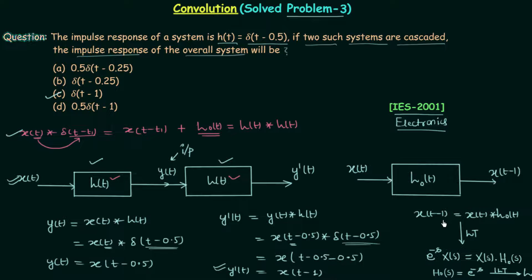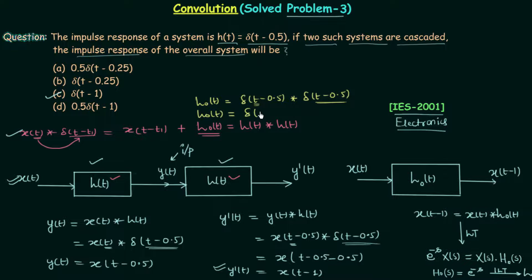Let's obtain the overall impulse response directly. We know h(t) = δ(t - 0.5), so h₀(t) = δ(t - 0.5) convolved with δ(t - 0.5). Using the convolution-shift property, in place of t we put t minus 0.5: h₀(t) = δ(t - 0.5 - 0.5) = δ(t - 1). So option C is the correct answer, and you can see the solution is obtained in just two steps.